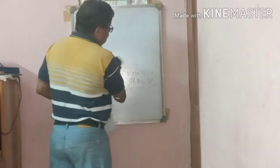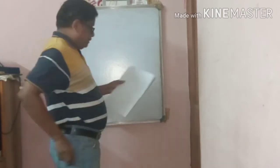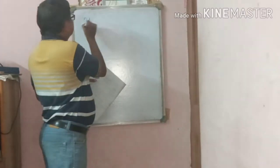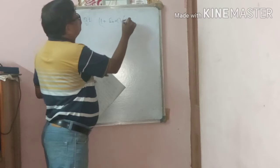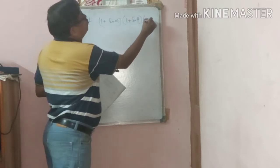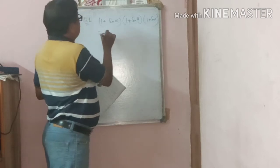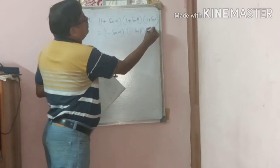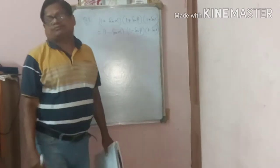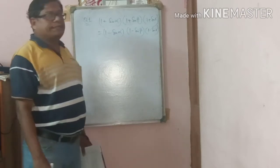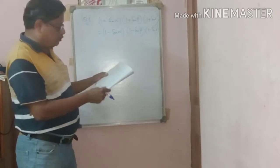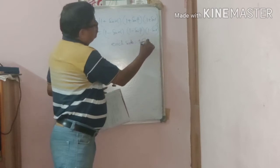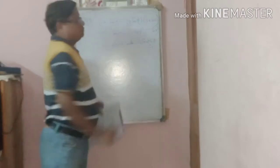Let me write down the first sum. Question number 1: Suppose (1 + sinα)(1 + sinβ)(1 + sinγ) = (1 − sinα)(1 − sinβ)(1 − sinγ). This is given. Then prove that each ratio is equal to ±cosα·cosβ·cosγ.